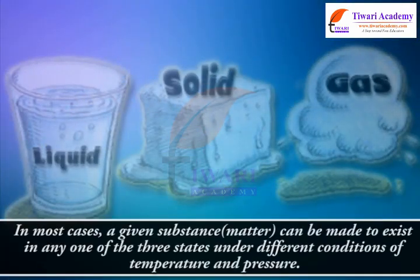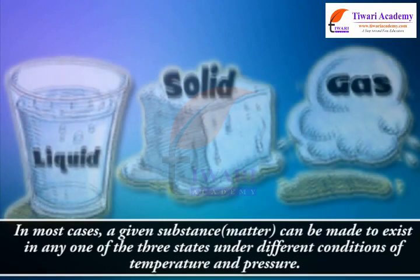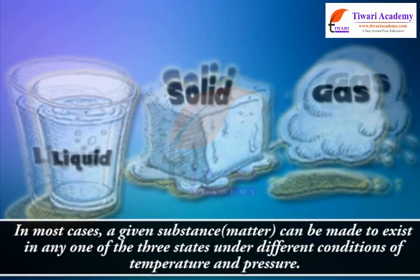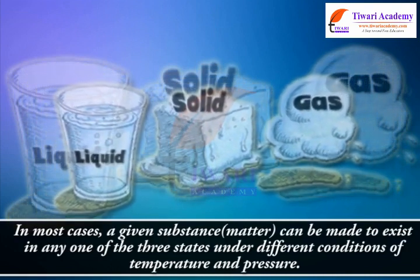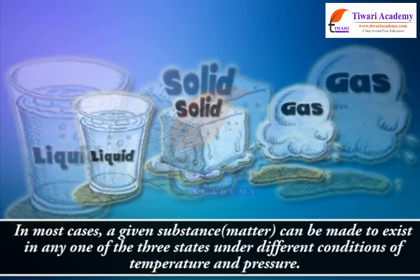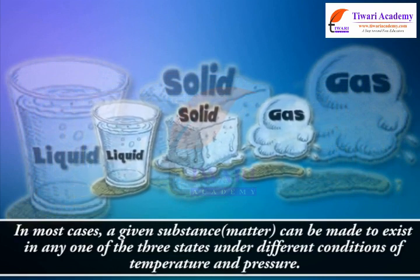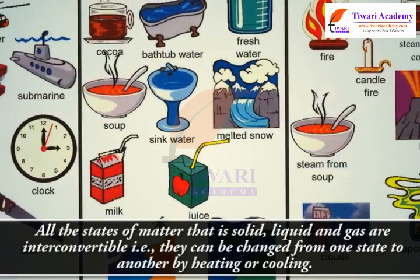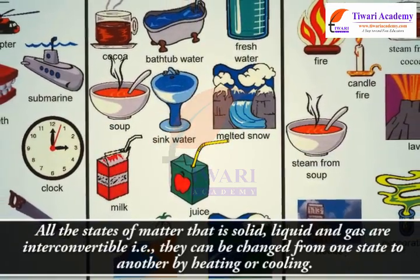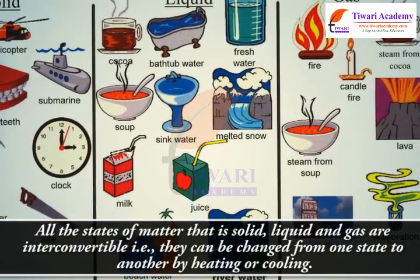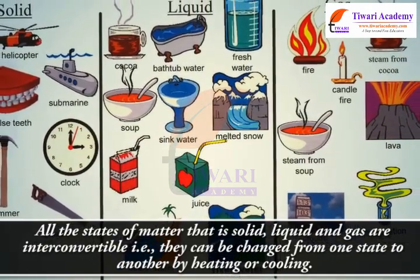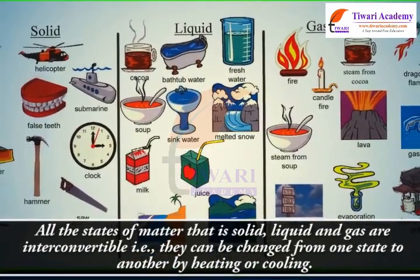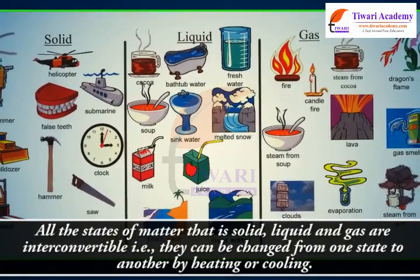In most cases, a given substance, matter, can be made to exist in any one of the three states under different conditions of temperature and pressure. Thus, all the states of matter, i.e., solid, liquid, and gas, are interconvertible, i.e., they can be changed from one state to another by heating or cooling.